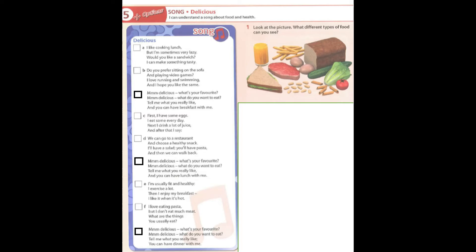First, I have some eggs. I eat some every day. Next, I drink a lot of juice. After that, I say... Mmm, delicious. What's your favourite? Mmm, delicious. What do you want to eat? Tell me what you really like. You can have breakfast with me.